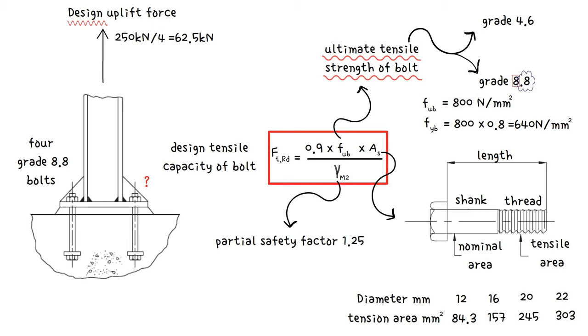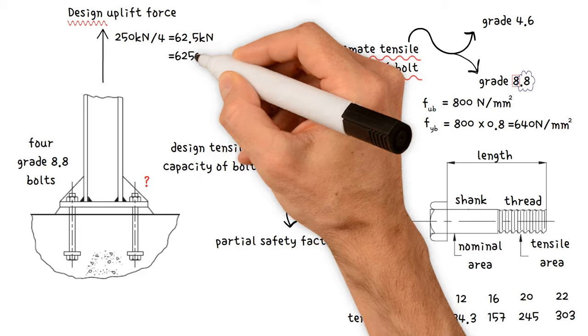62.5 kN times 1000 to convert it to newton, which equals 62,500 N.